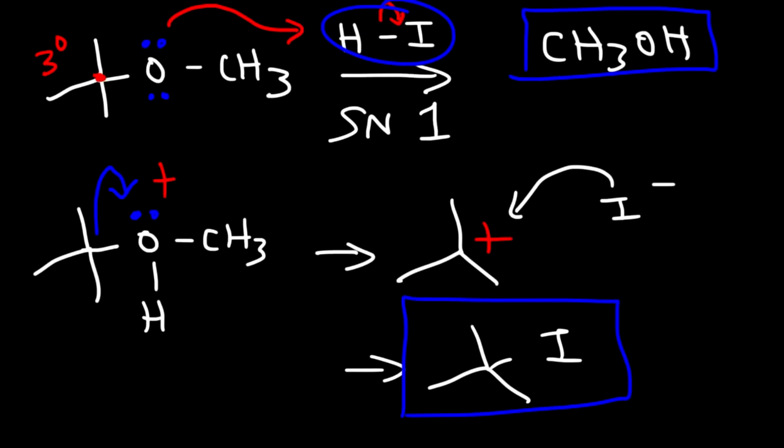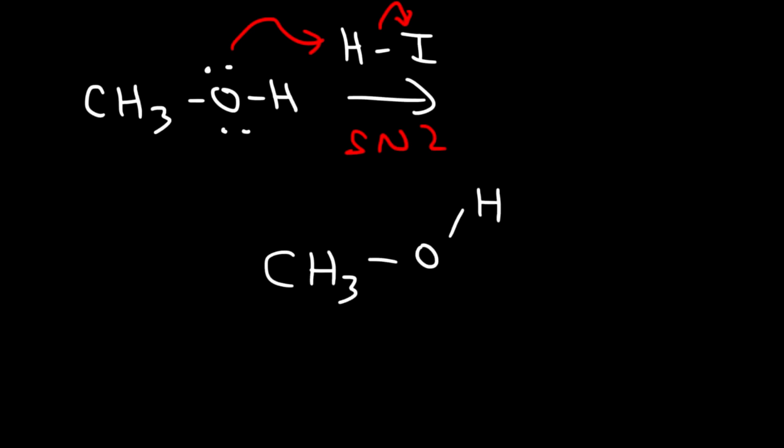Now it's important to understand that if we add excess HI, it can react with methanol. So if we add another HI molecule, then this oxygen will be protonated in the first step. By the way, this will occur by an SN2 mechanism. So we're going to get this intermediate. And then in the second step, iodide is going to attack from the back in an SN2 reaction, kicking out the water molecule, giving methyl iodide.